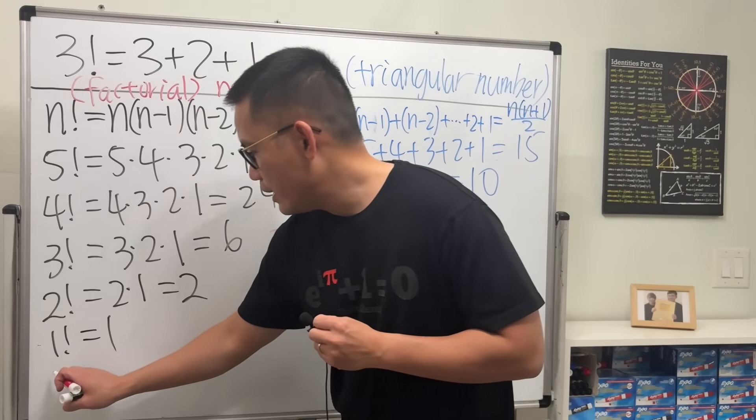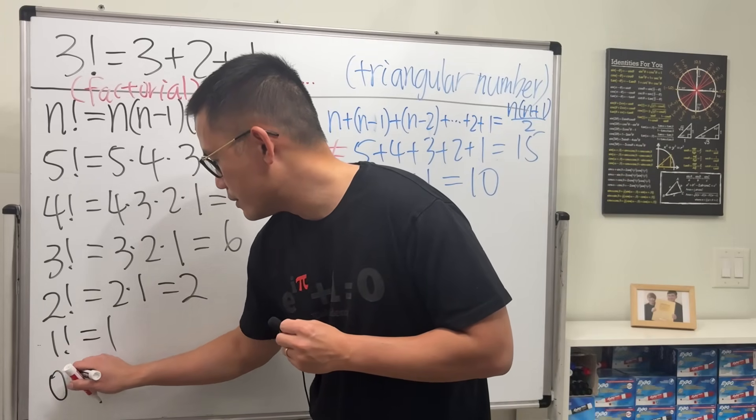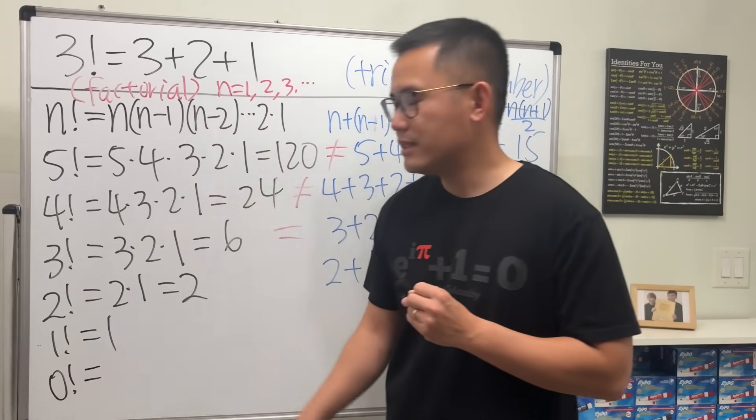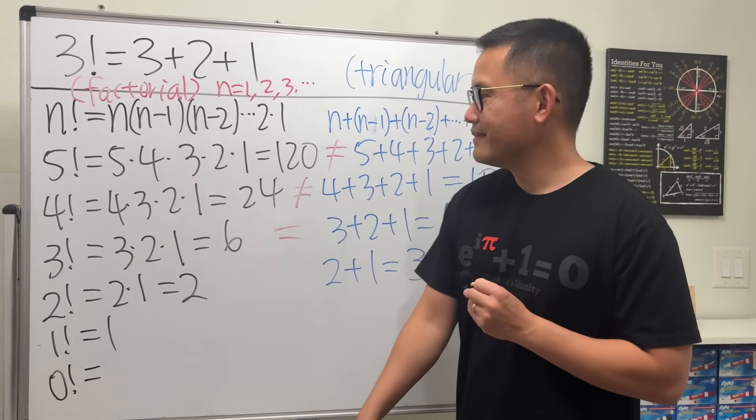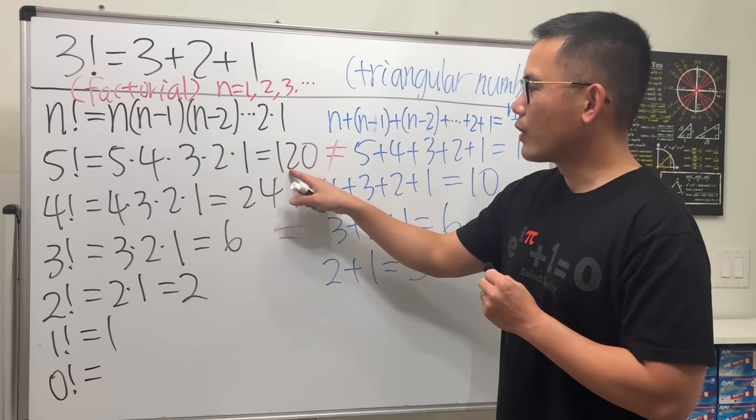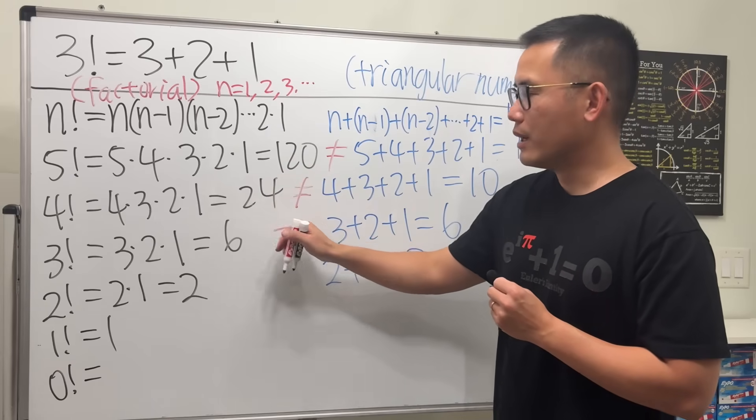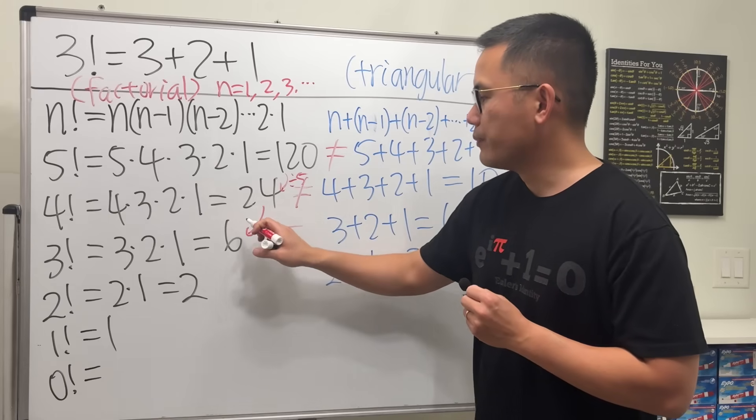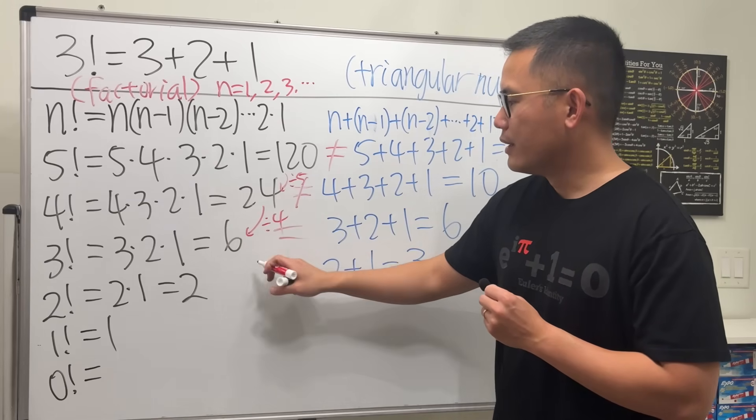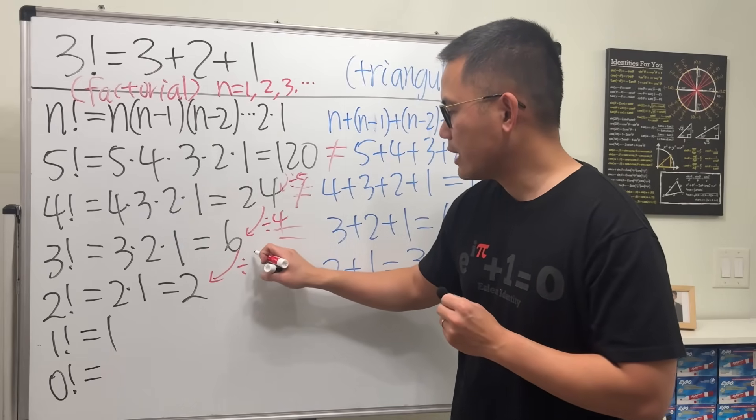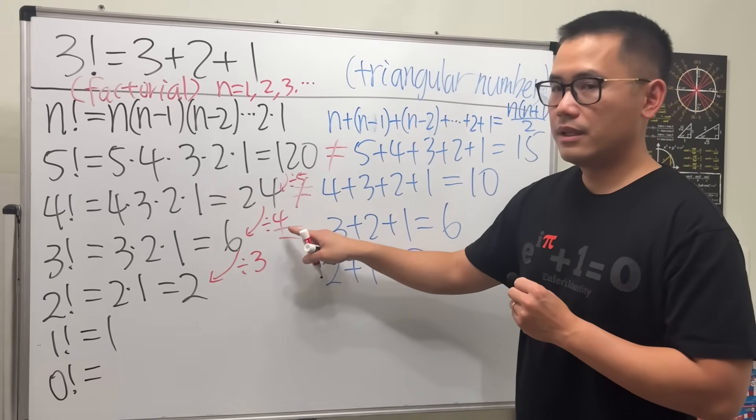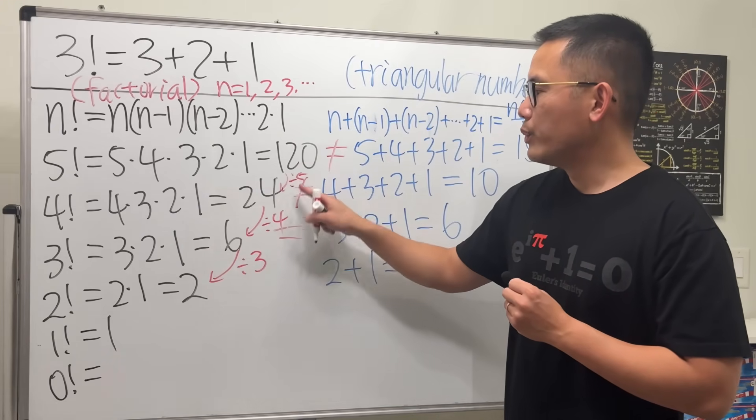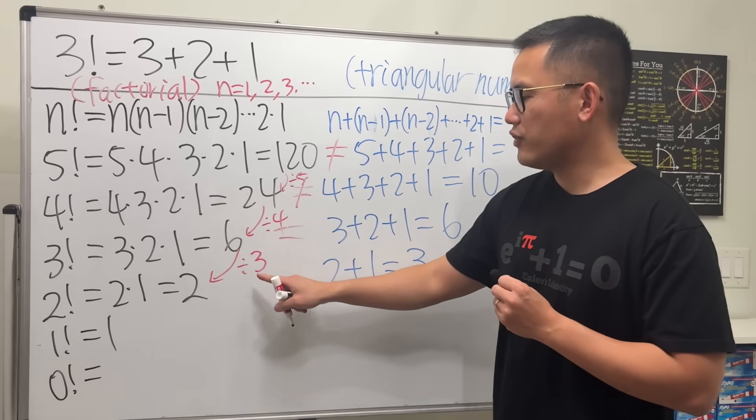hand side here, from 120 to 24, you divided by 5. From 24 to 6, you divided by 4. From 6 to 2, you divided by 3. What's the pattern? We divided by 5, divided by 4, divided by...